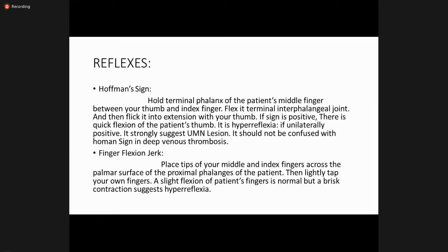Hoffmann's sign: hold the terminal phalanx of the patient's middle finger between your thumb and index finger, flex it at the terminal interphalangeal joint, then flick it into extension. If the sign is positive, there is a quick flexion of the patient's thumb — this indicates hyperreflexia. If unilaterally positive, it is strongly suggestive of upper motor neuron lesions. Do not confuse it with Homan's sign, which is a sign for deep venous thrombosis. For the finger flexion jerk, place the tips of your middle and index fingers across the palmar surface of the proximal phalanges of the patient and lightly tap your own fingers; a brisk contraction suggests hyperreflexia.